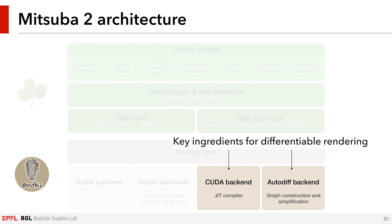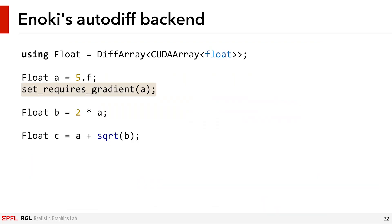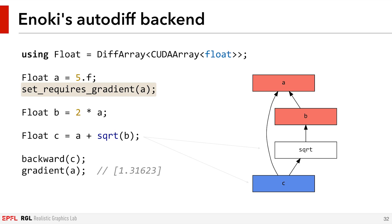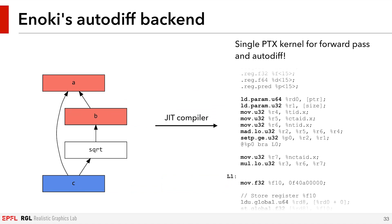Finally, Enoki defines an autodiff backend which performs reverse-mode automatic differentiation. We define the float type to be an Enoki autodiff array, and indicate that we want to compute gradients for some of the inputs, such as variable a. For any computation involving that input, the autodiff backend will also maintain a representation of the computation graph, which enables us to backpropagate through the entire computation. Because the autodiff array type is composed over the CUDA array type by nesting, all of the graph operations for autodiff are themselves being translated to PTX by the CUDA backend. So the forward computation and graph construction are merged together into the same kernel, creating nice opportunities for automatically reusing parts of the computation shared between the forward and backward passes.